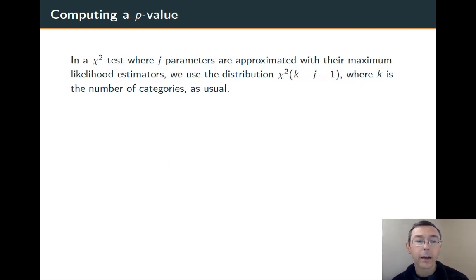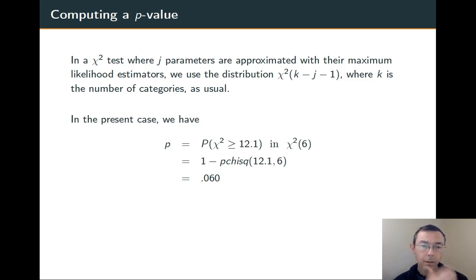Here's the general rule. If you're running a chi-squared test where you have J parameters approximated from their maximum likelihood estimators, you have to remove that number of degrees of freedom. So chi-squared of k minus J minus 1, where k is the number of categories. Here for us, eight.